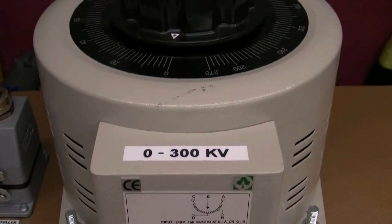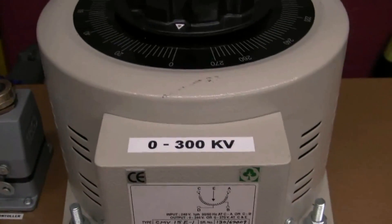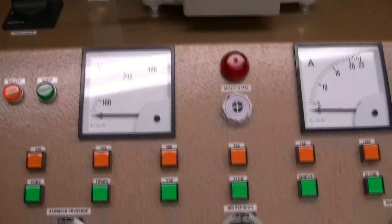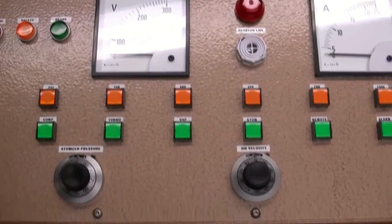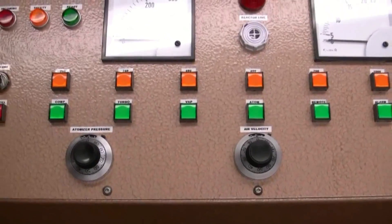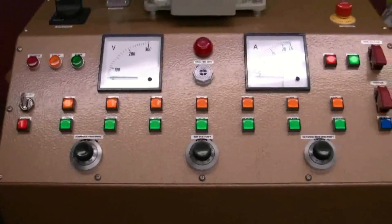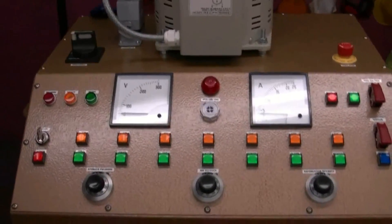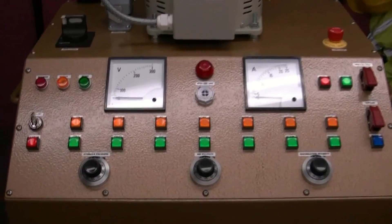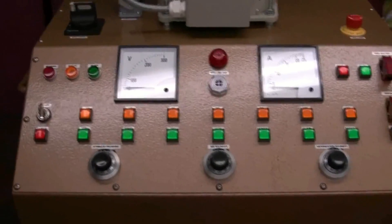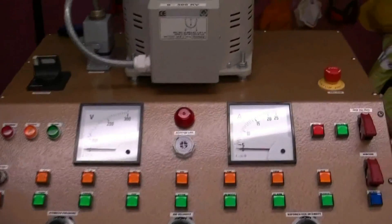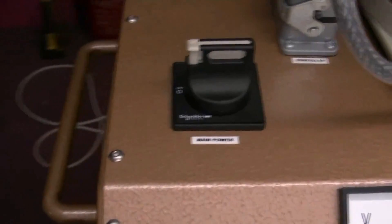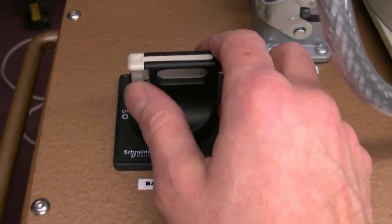This unit will feed the primary of some transformers which then boost it up a thousand to one ratio to get 300kV. I'll probably only need 200kV, but you know, this is a big boy's power supply. There's nothing better than over-engineering something. This thing I don't think I could destroy even if I tried.